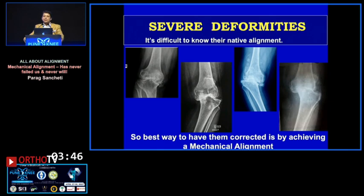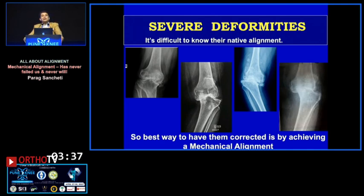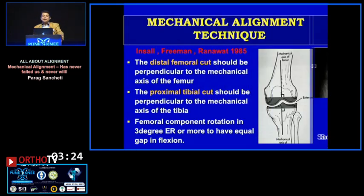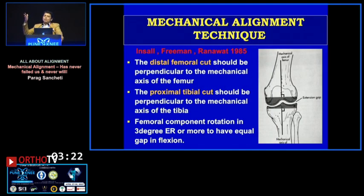When you get cases of severe varus or severe valgus — which is what we deal with here — how do we know what the native alignment was? Someone made a point that you should take X-rays at age 25 and store them, which might be a good idea for non-arthritic knees. But otherwise, how are you going to know the native alignment?